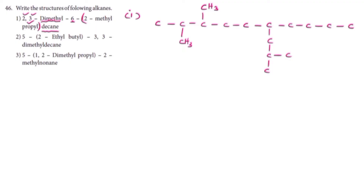This is the second position. In the main chain, we find: first position, second position, third position. In the 2nd position, there is methyl. Then there is a propyl group — propyl means 1, 2, 3. In the 3rd carbon, there is a methyl group.